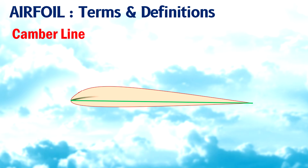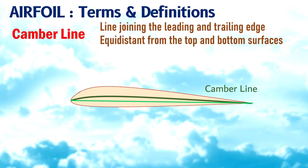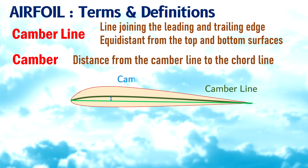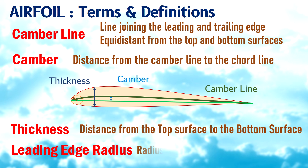Camber line: a line joining the leading and trailing edge of an airfoil, equidistant from the top and bottom surfaces. Camber: distance from the camber line to the cord line. Thickness: distance from the top surface to the bottom surface. Leading edge radius: the radius of curvature at the leading edge.